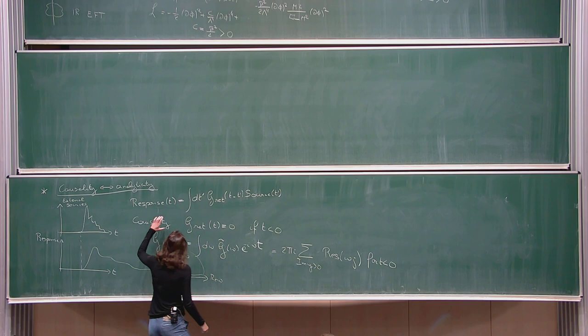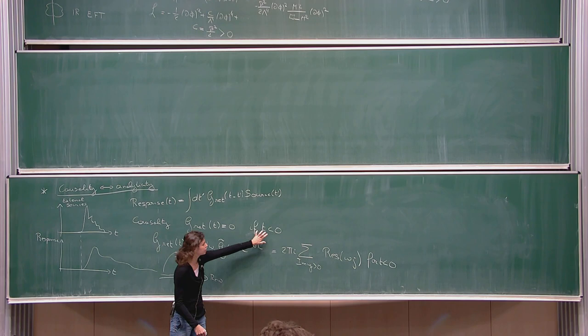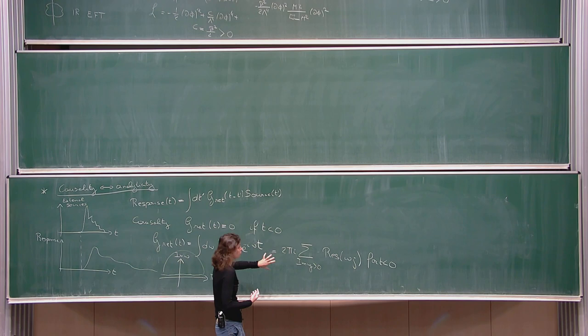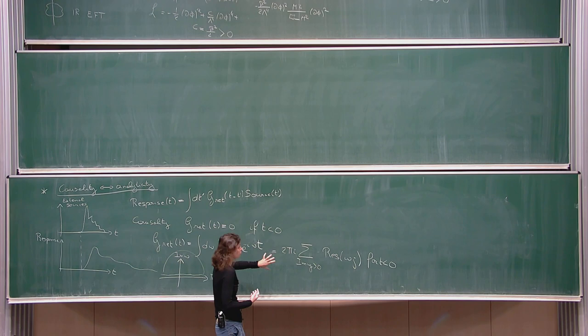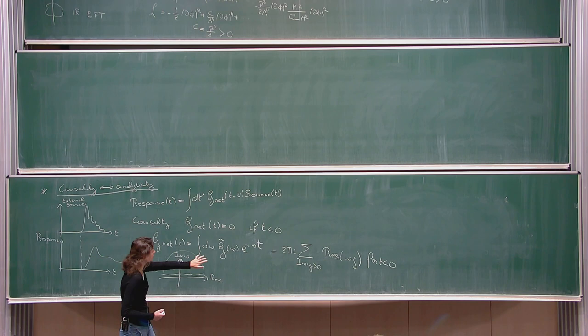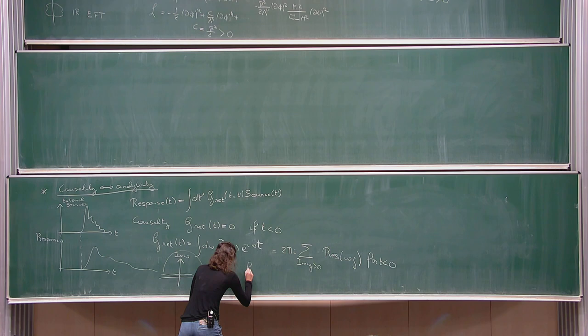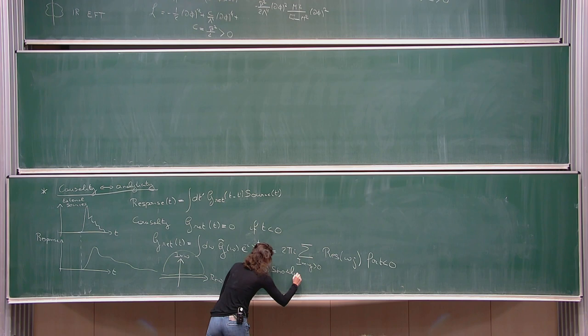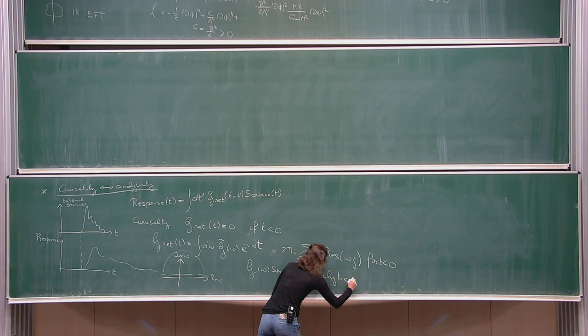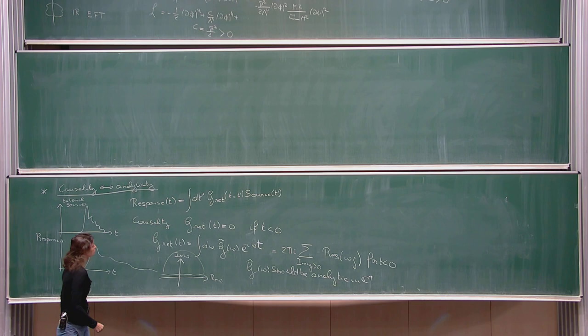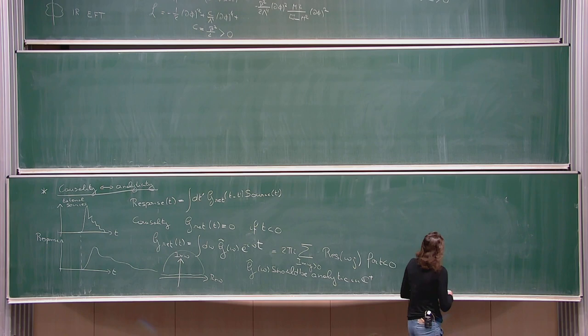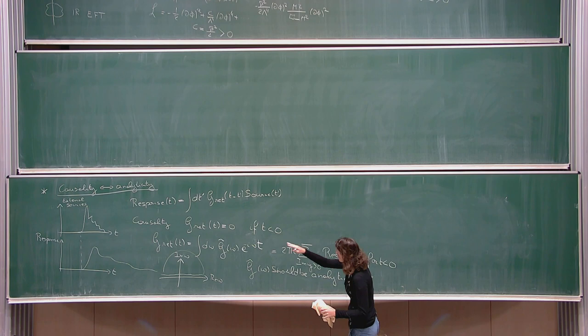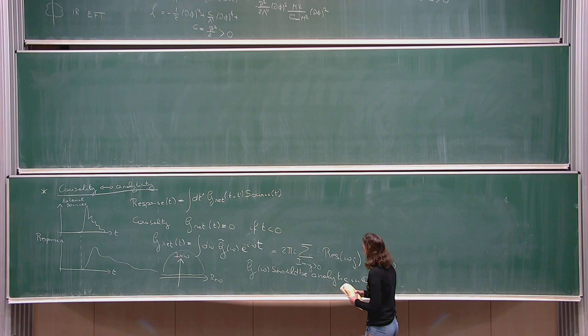The requirement of causality — that the retarded propagator vanishes for t negative — tells us there should be no poles in the upper half of the complex plane. So the statement of causality manifests at the level of the Fourier transform of the retarded propagator as the statement that G̃(ω) should be analytic in the upper half of the complex plane. There's a relation between the statement of causality and the statement of analyticity. In the case of scalar field theories it's actually a two-way discussion.